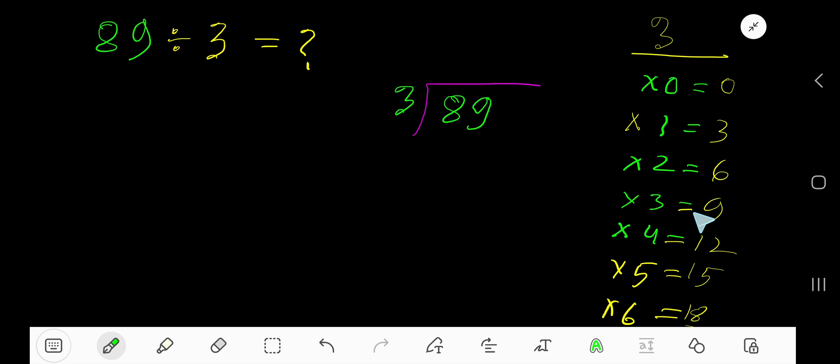3 goes into 8 how many times? 2 times. 2 times 3 is 6. Subtract, get 2. Bring down this digit: 29.